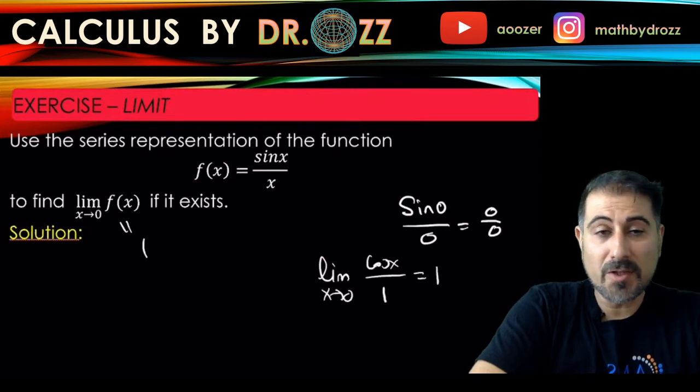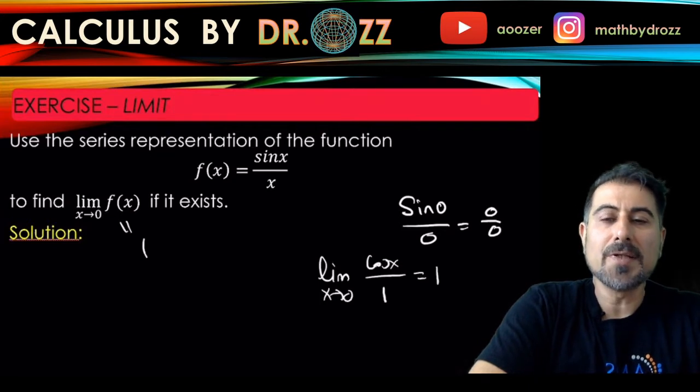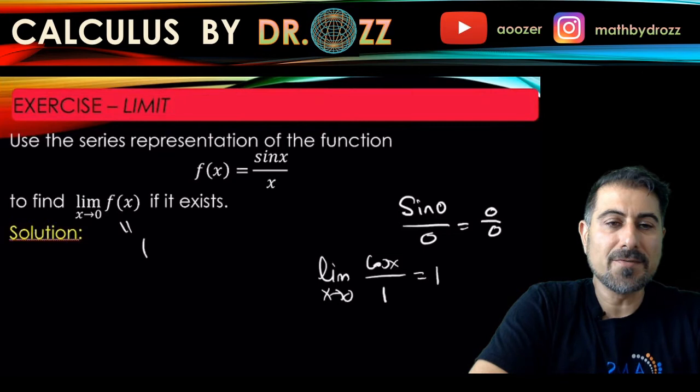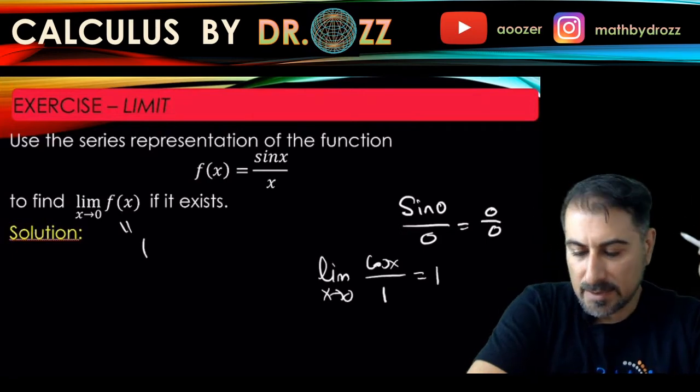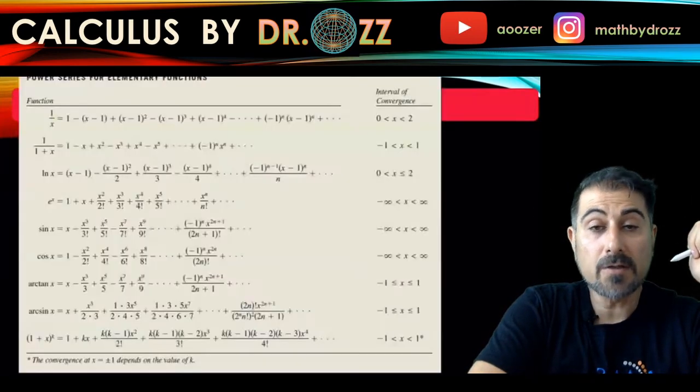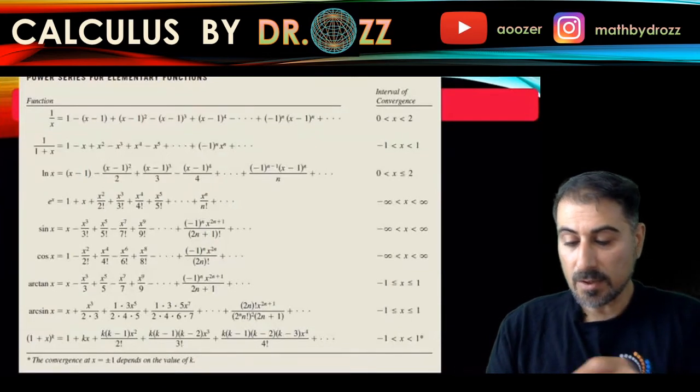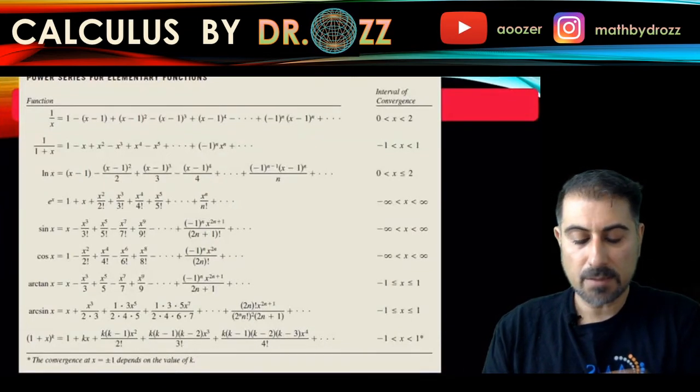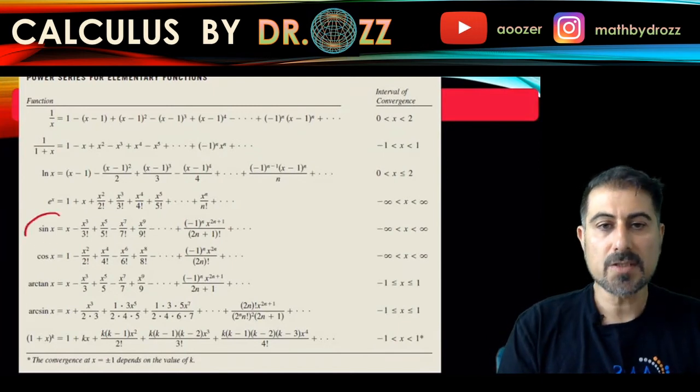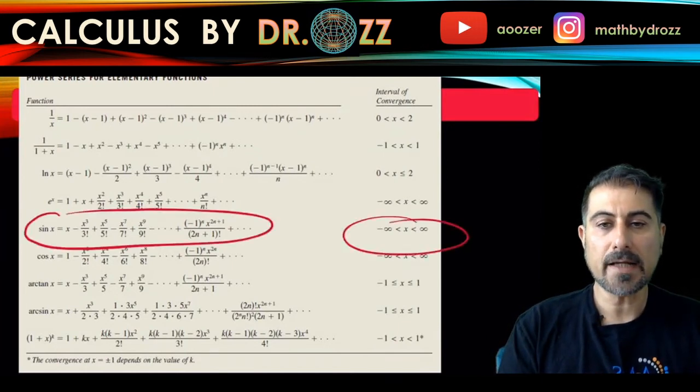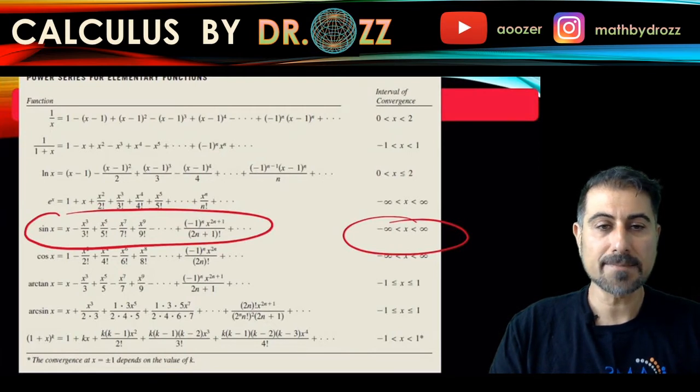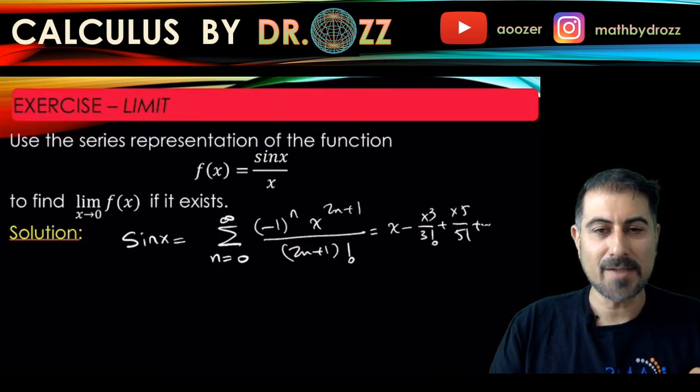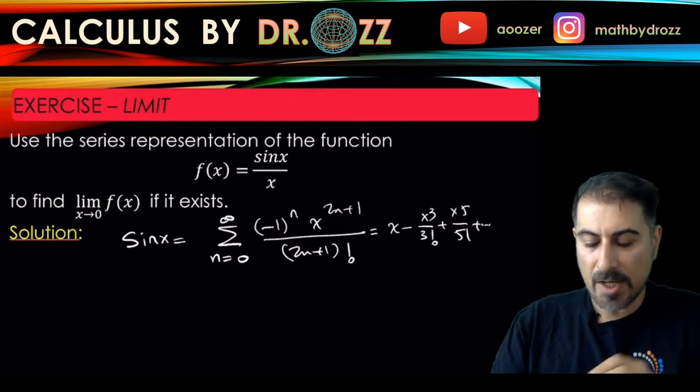We know it by using L'Hôpital's rule or more primitive techniques like using the calculator and having a table of sample values. But now we want to use the benefit of having a power series representation of sin(x)/x. So let's go back to our table and see what the power series representation of sin(x) looks like. It's right here, it comes with the interval of convergence negative infinity to infinity. I'm gonna use this power series to reproduce the power series of sin(x)/x.